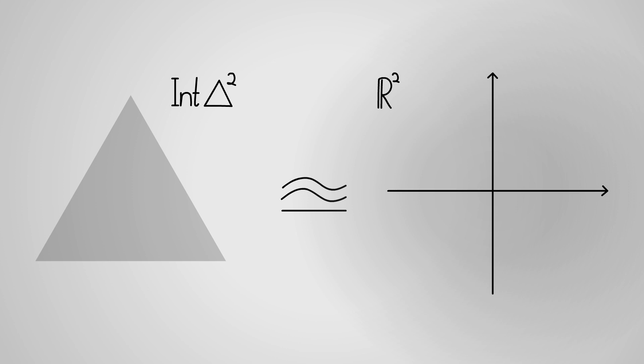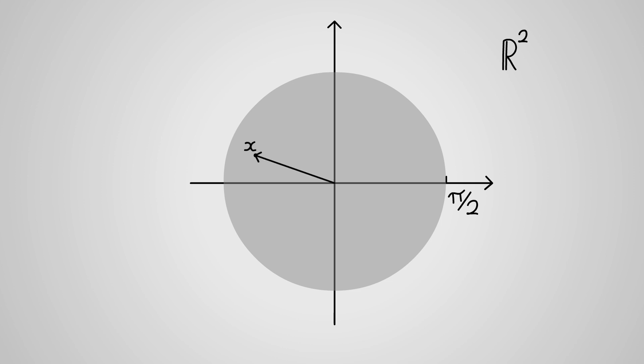To see this, take the interior of an n-simplex and apply a homeomorphism with the closed n-ball of radius pi over 2 centered at the origin in Rn. Now, scale each of the resulting points by the tangent of its magnitude.